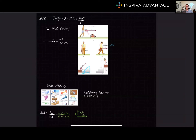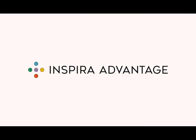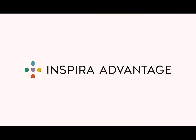These concepts of work, mechanical advantage, and simple machines are essential for understanding the principles of physics that are an integral part of your MCAT prep. By mastering these topics, you'll develop a solid foundation to tackle more complex problems related to energy, motion, and mechanical systems. Thank you so much for watching our video on work and simple machines, and I will see you next time.